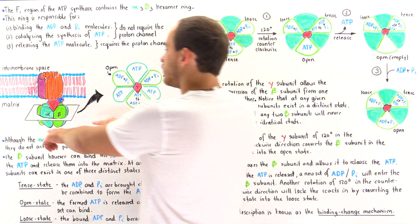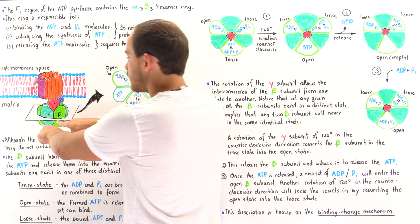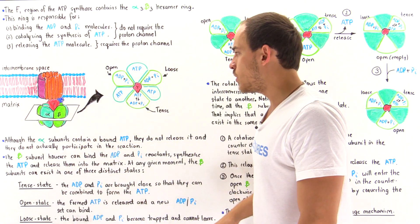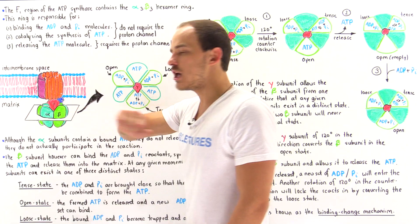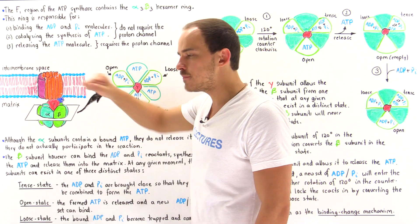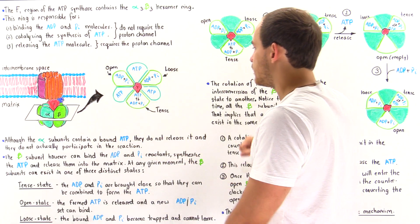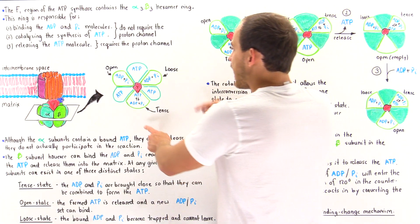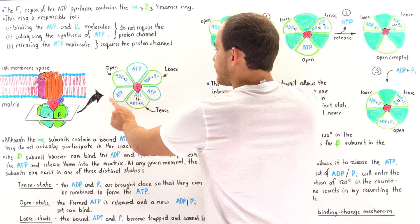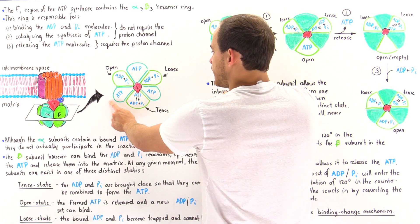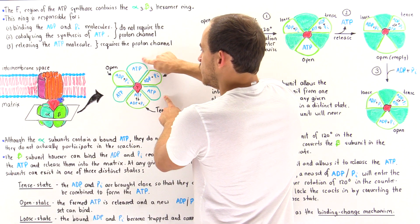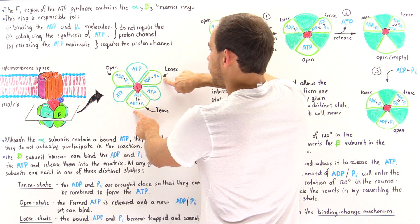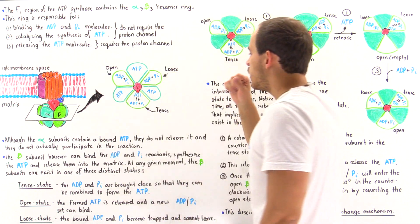Let's take a cross-section of the alpha-3 beta-3 hexamer ring and examine it from top to bottom. We have three alpha units and three beta units arranged alternately: alpha, beta, alpha, beta, alpha, beta.